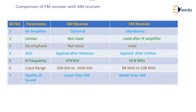The IF frequency range in the AM receiver is 470 kilohertz, whereas in the FM receiver it is 10.8 megahertz. The input frequency range for AM receiver is 530 kilohertz to 1650 kilohertz.